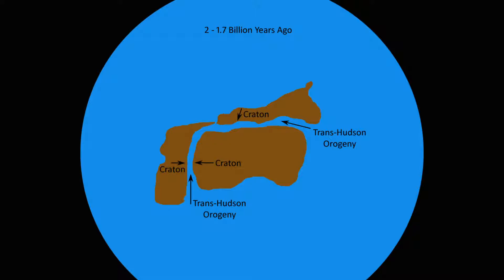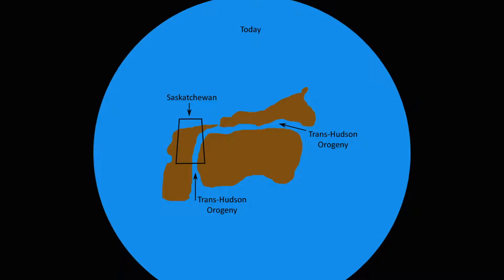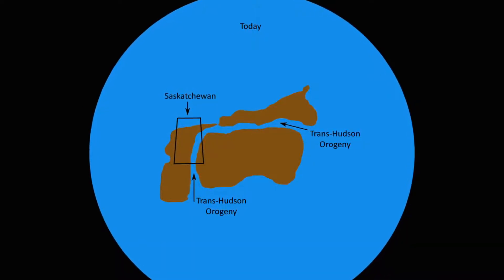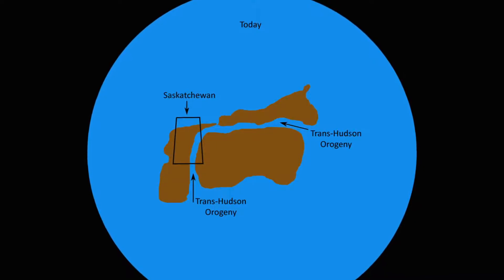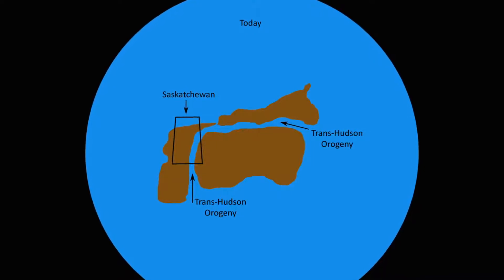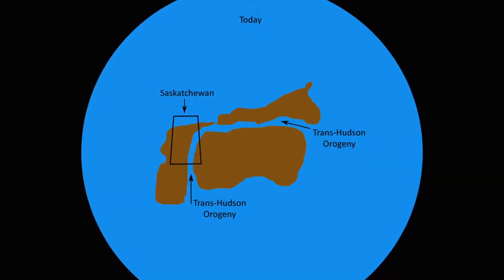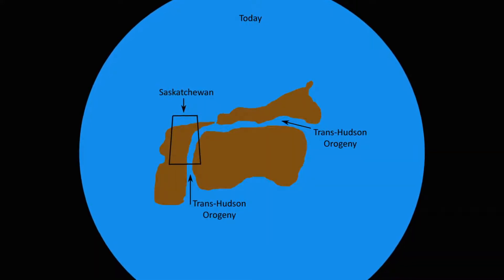It formed the pre-Cambrian Canadian Shield and the initial North American continent. The suture zone of the Trans-Hudson Orogeny forms a right angle centered in northeastern Saskatchewan, creating a geological environment stretching from the Dakotas in the south to James Bay in the north. This is the largest orogenic belt of its kind in the world.